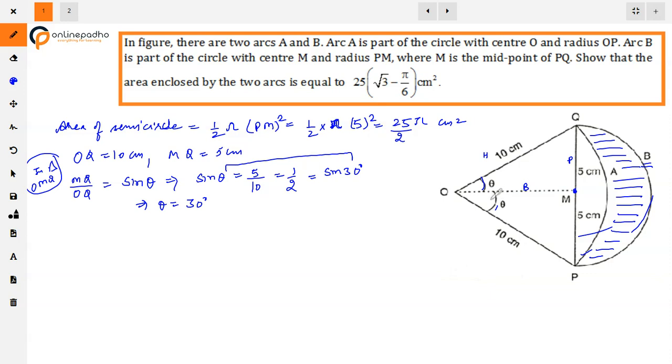Now we can find the complete angle, angle POQ, that is 2 into 30 means 60 degree. Angle POQ is equal to 60 degree.